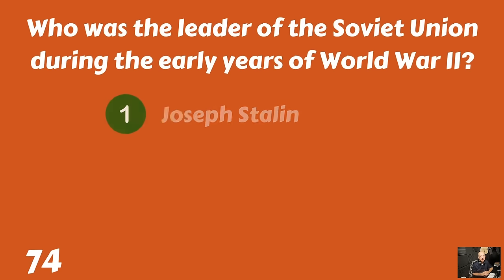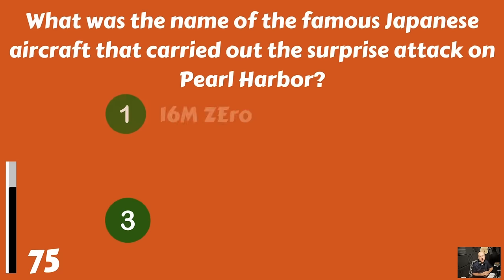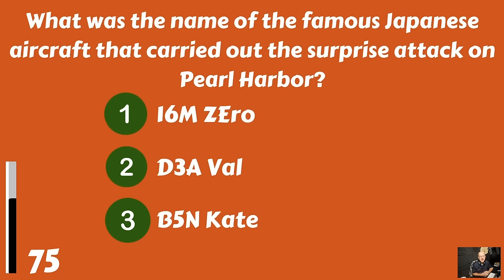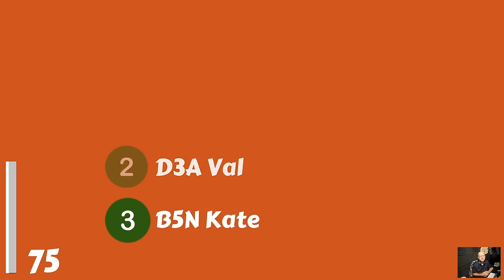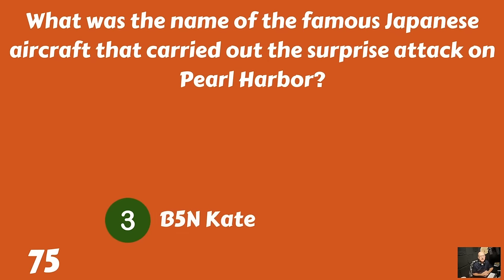What was the name of the famous Japanese aircraft that carried out the surprise attack on Pearl Harbor? A6M Zero? D3A Val? Or B5N Kate? It was B5N Kate.